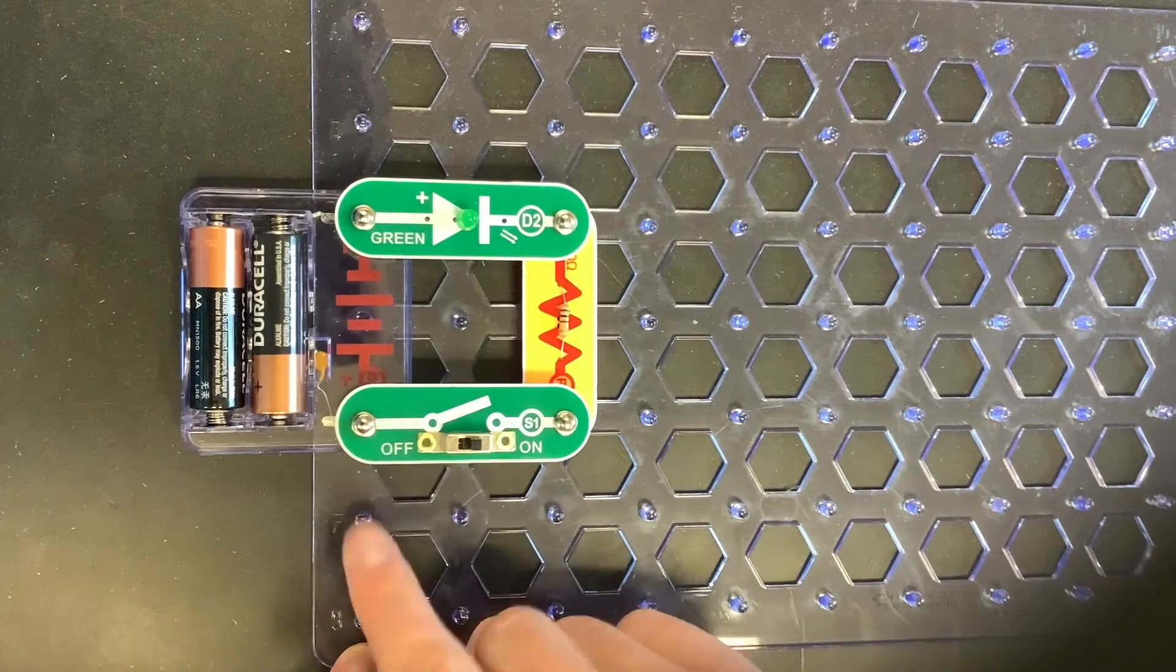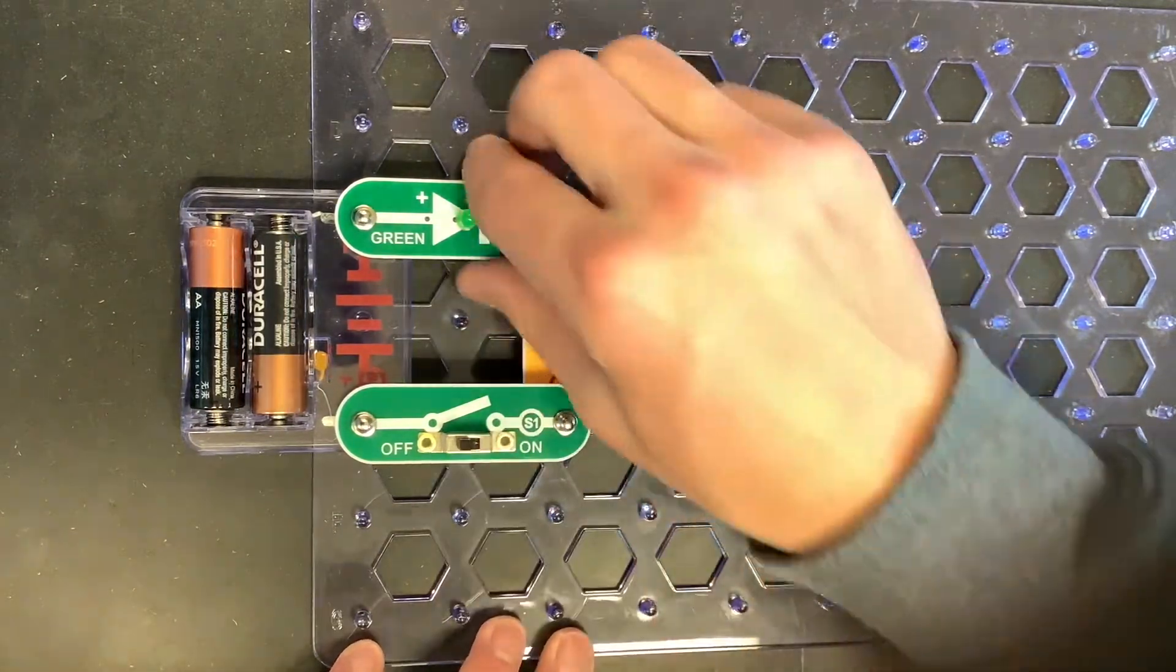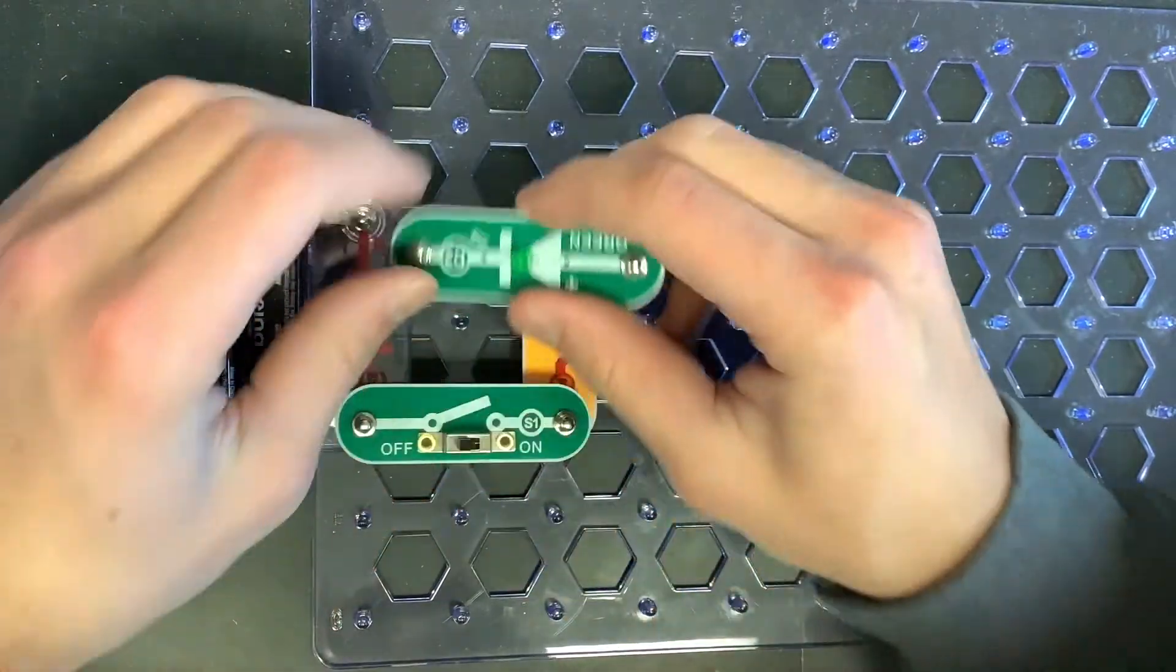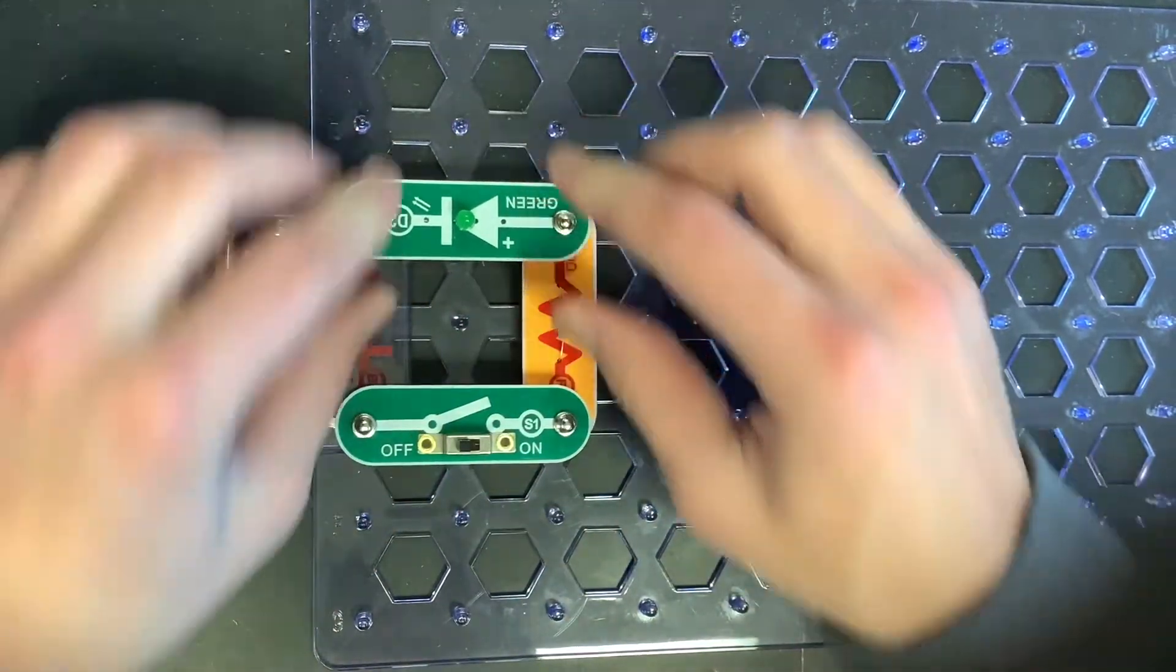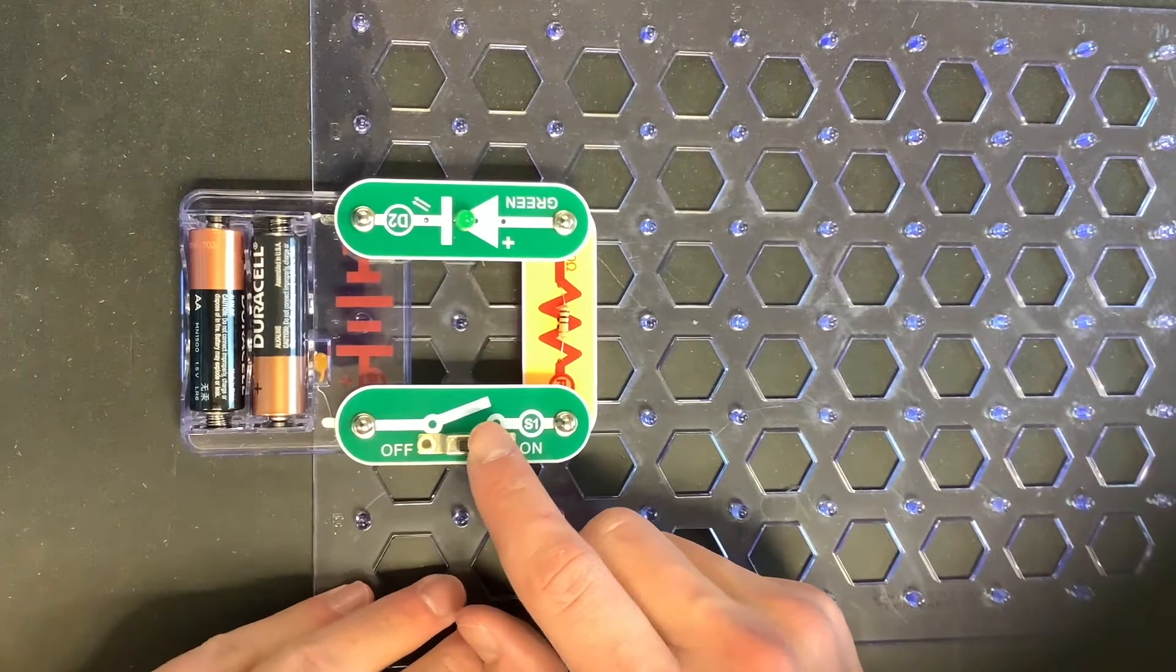So if we turn on this switch, nothing happens. So that must mean our current is going in the wrong direction. So we'll flip that, turn the switch on, and then that LED does turn on.